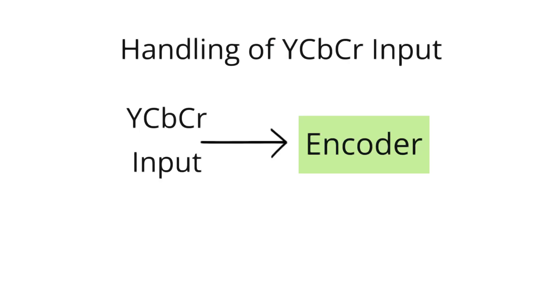If the input is already in YCBCR color space, another common color space particularly in video applications, no color space conversion is performed. YCBCR is already structured with separate luma and chroma components similar to YCOCG, making it suitable for compression without the need for conversion.